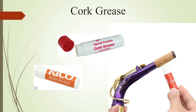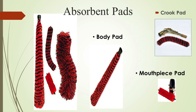Cork grease provides temporary lubrication between the cork sheet of the neck and the mouthpiece. Unlike other greases, it's odorless, tasteless and non-toxic. It evaporates automatically after some time, so it has to be applied every time before inserting the mouthpiece. Some people also apply grease on the other end of the neck so it can be easily inserted to the body.